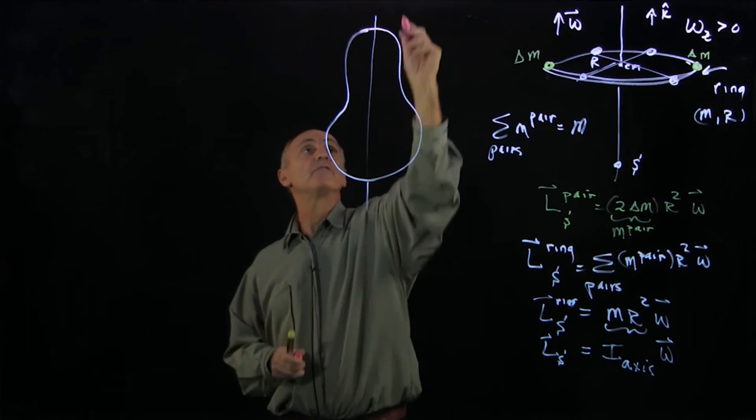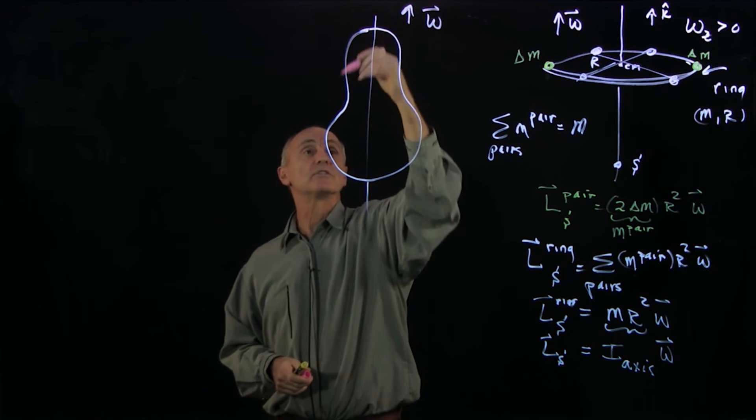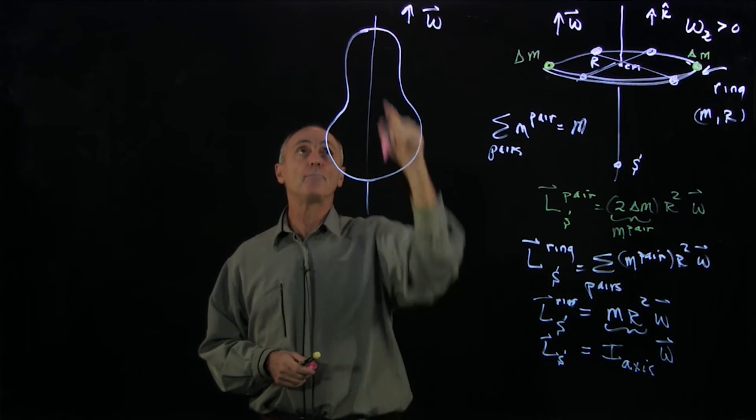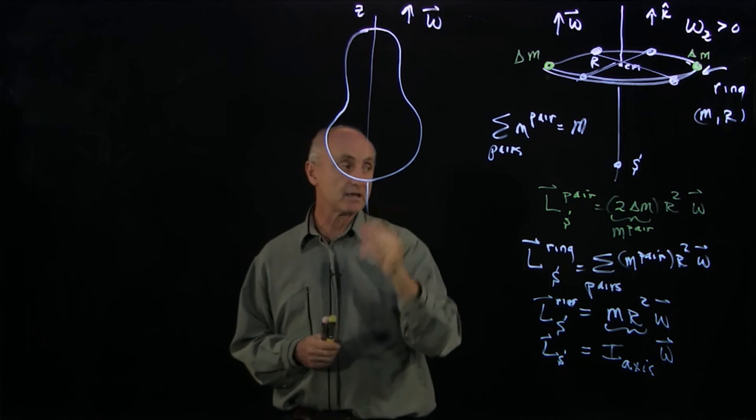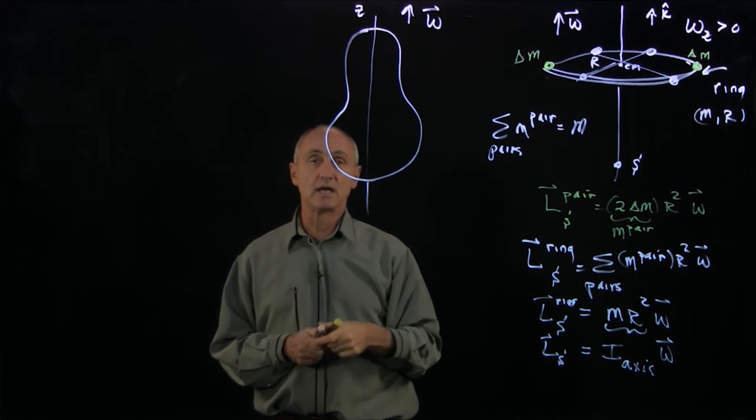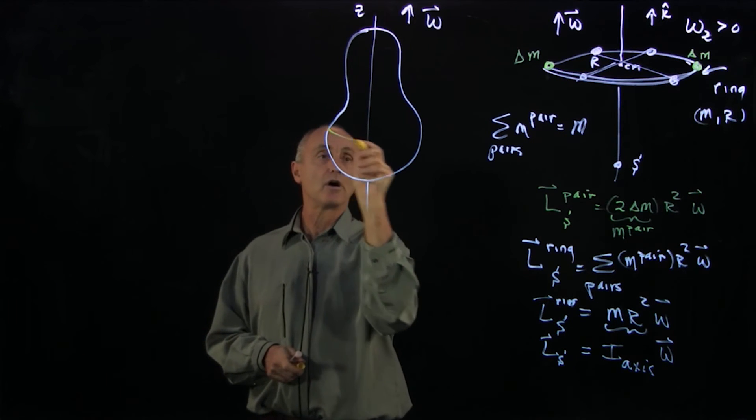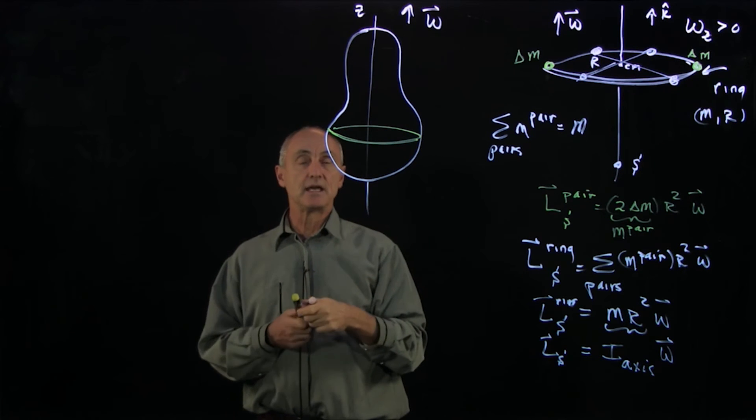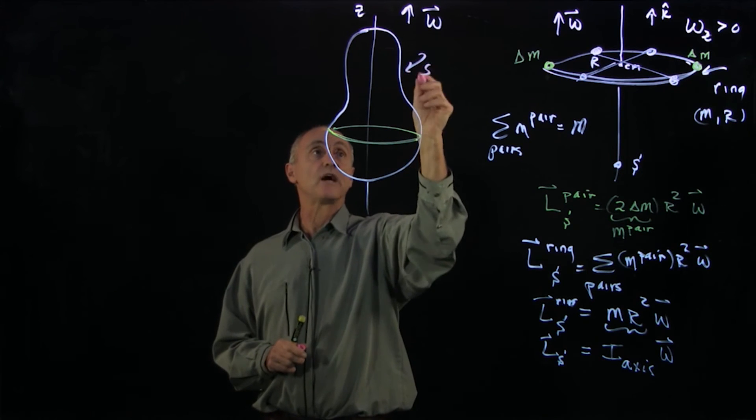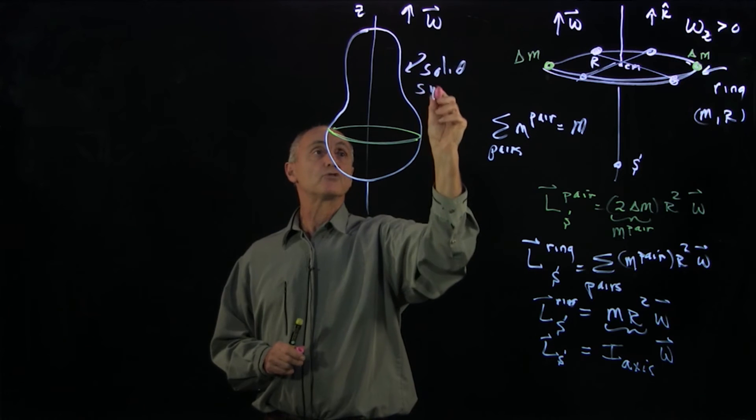What is the moment of inertia of this pear-shaped object, which is intended to be symmetric, about the z-axis? Well, I can think of that pear-shaped object as consisting of a ring, and it's a solid object. This is a solid, symmetric object.